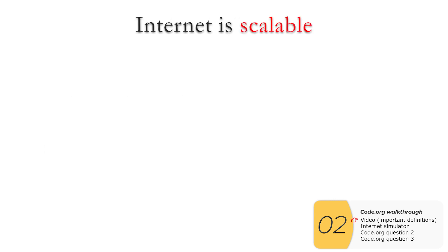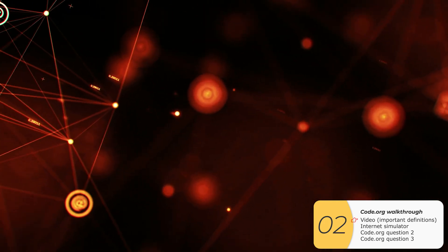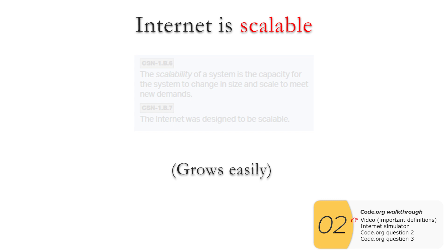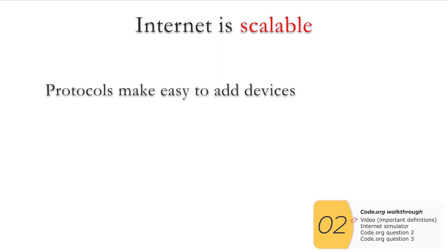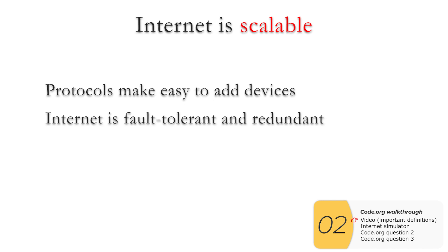The last major concept is that the internet is scalable, which just means it grows easily. Protocols make it easy to scale because you can add as many things as you want, as long as they follow the rules. The internet is also fault tolerant and redundant, which also makes it easy to scale — if one of 8 billion devices failed and crashed the whole system, that would be terrible for scalability.